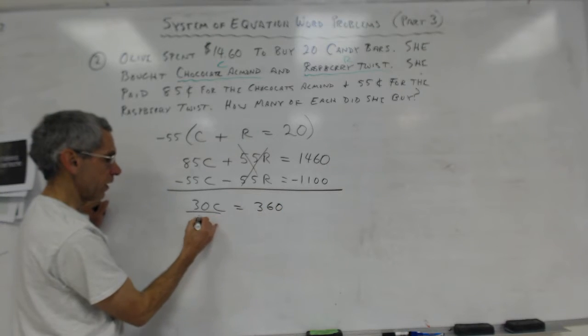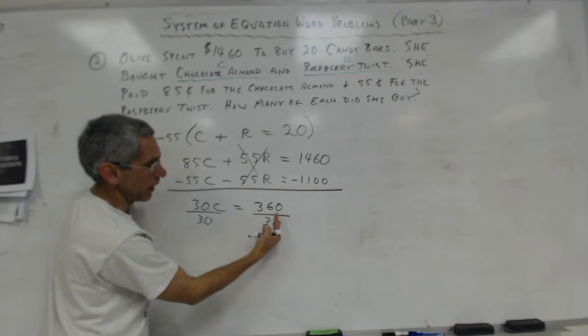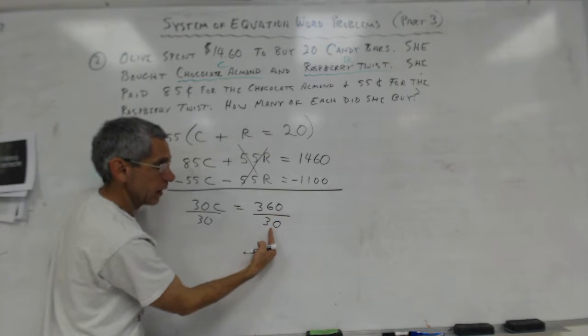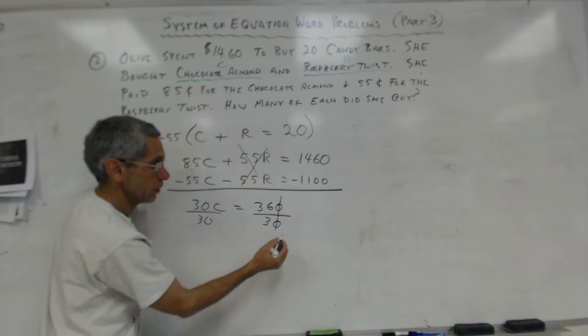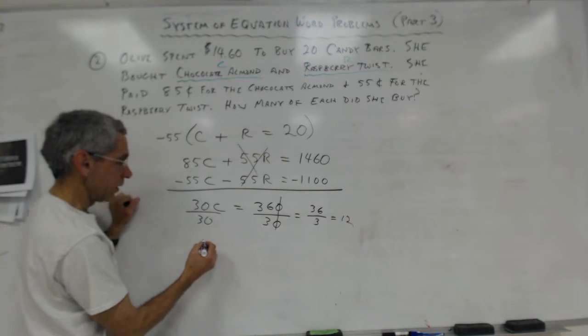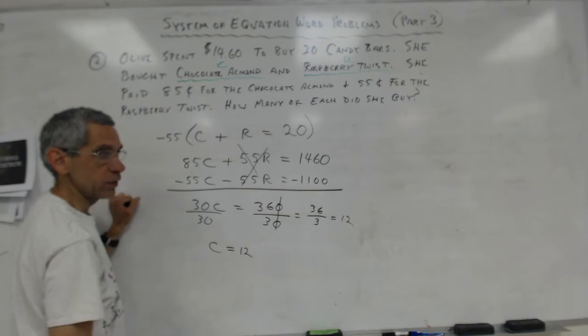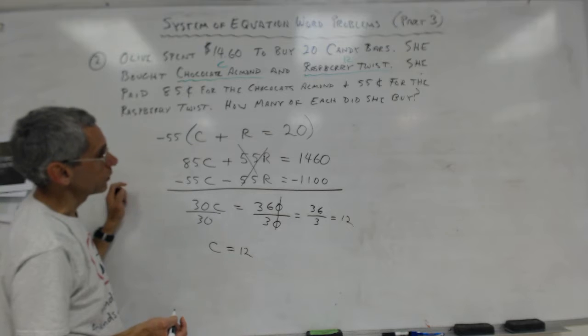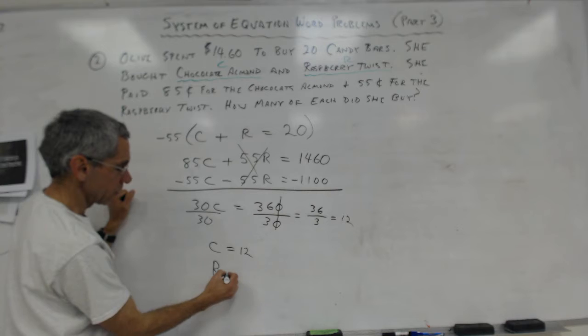If I divide by 30, divide by 30. Do you guys know this little trick? If you have a number upstairs that has a zero in the end and you have a number downstairs with a zero in the end, you can cross the two zeros out. So really I have 36 divided by 3, which is 12. So I know that C, the number of chocolate almond bars were 12. So how many raspberry twists? I just subtracted from 20, so the raspberry twist is equal to 8.